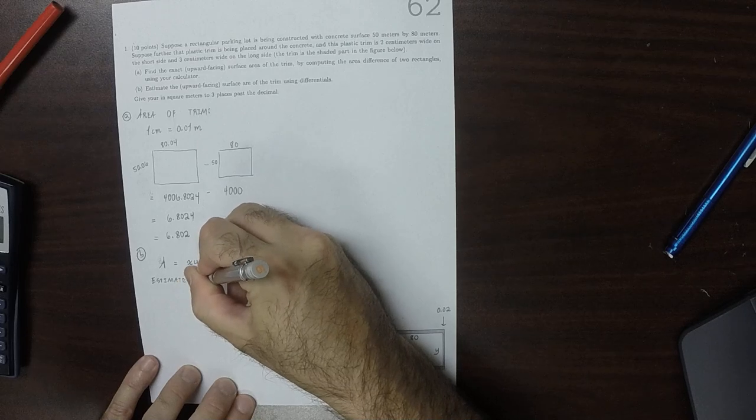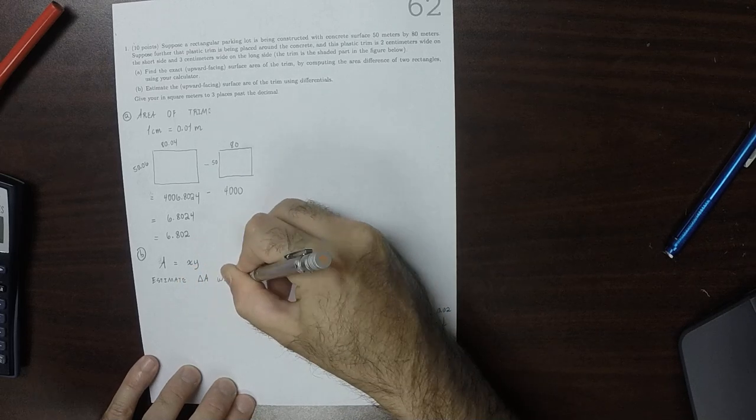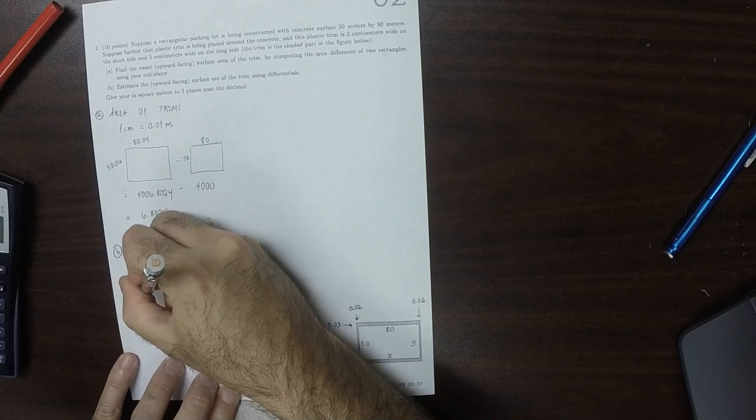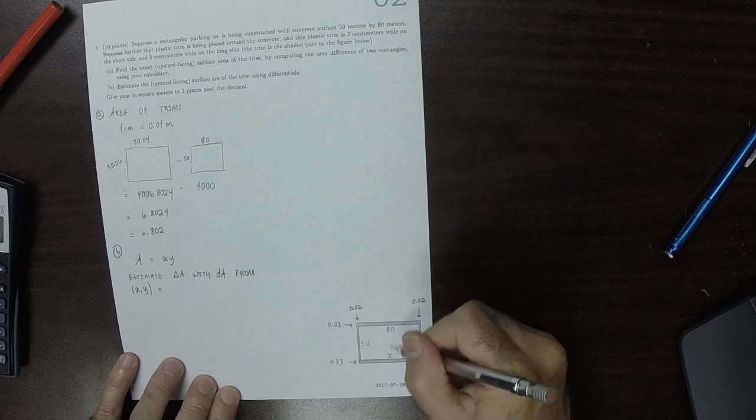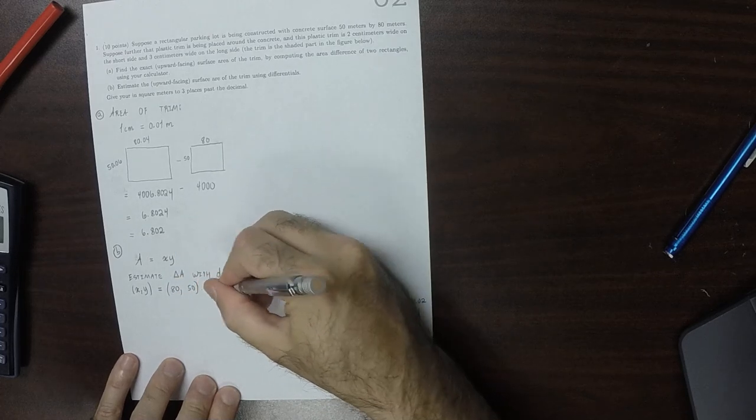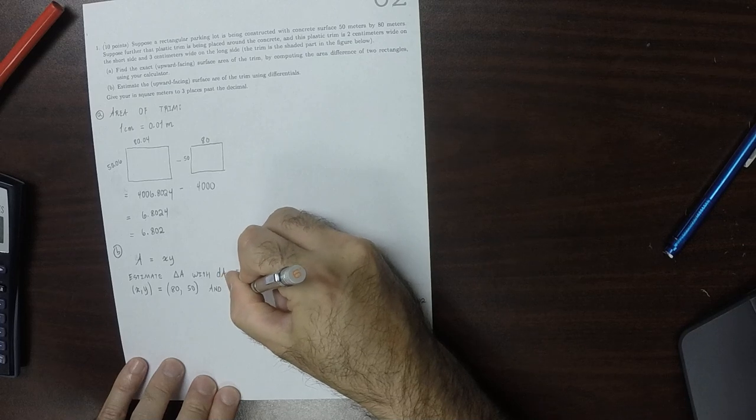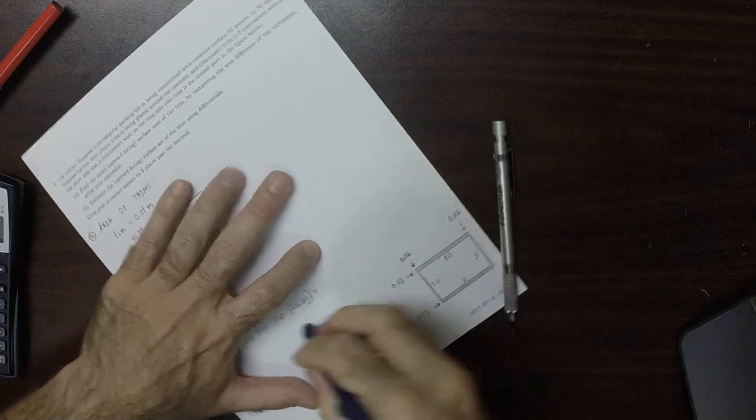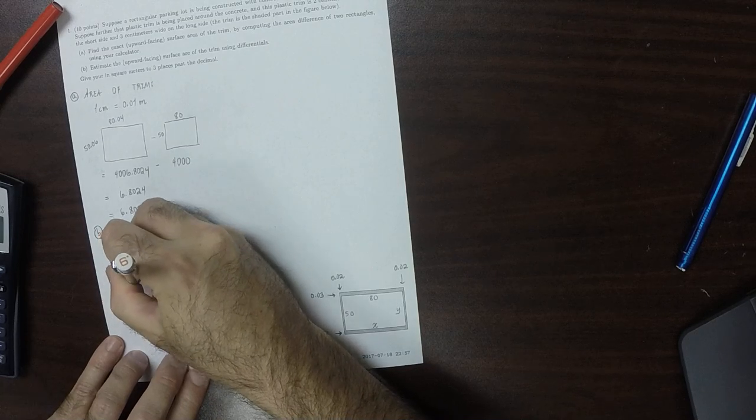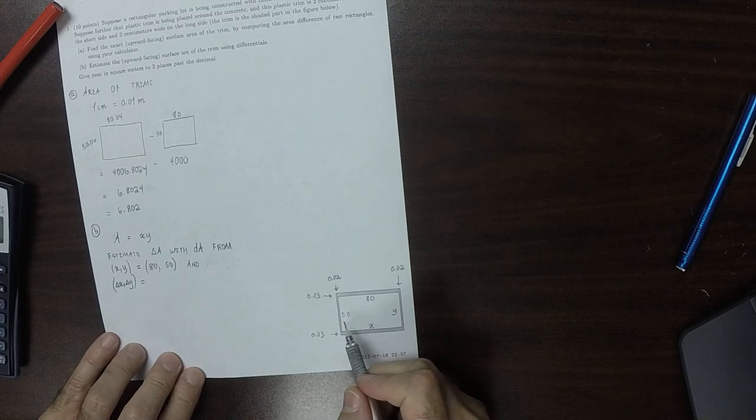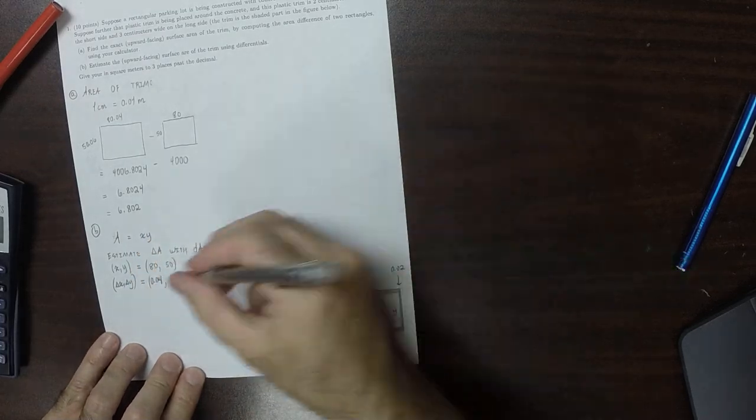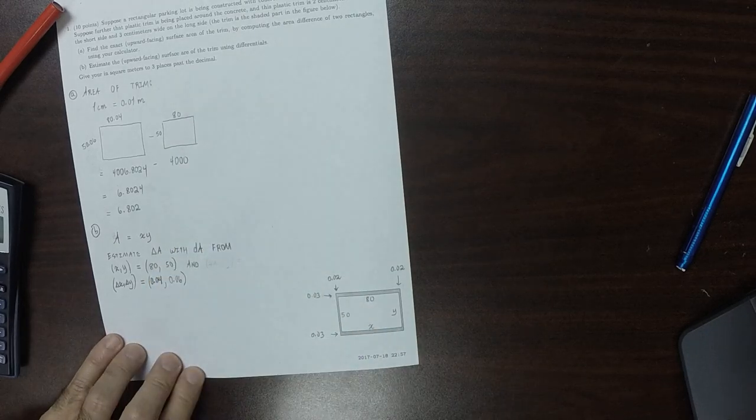From x and y equal to 80, 50, and delta x, delta y equal to, so the change in x is 0.04 and the change in y is 0.06.